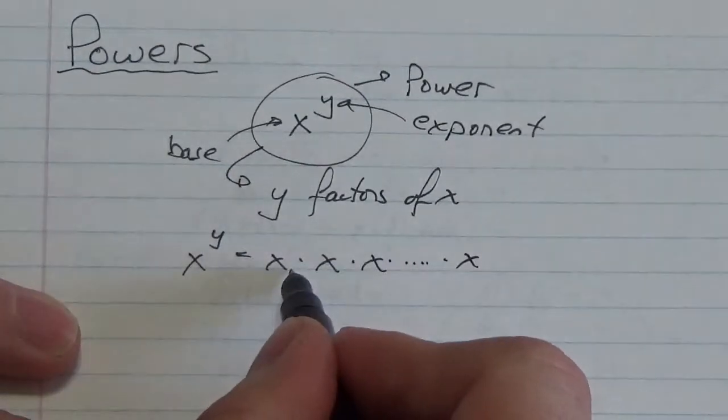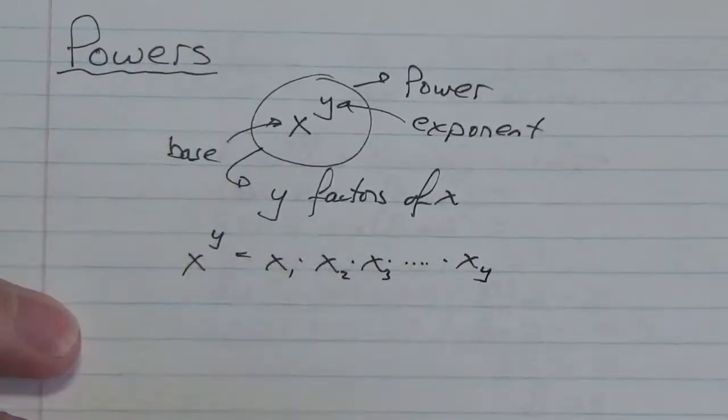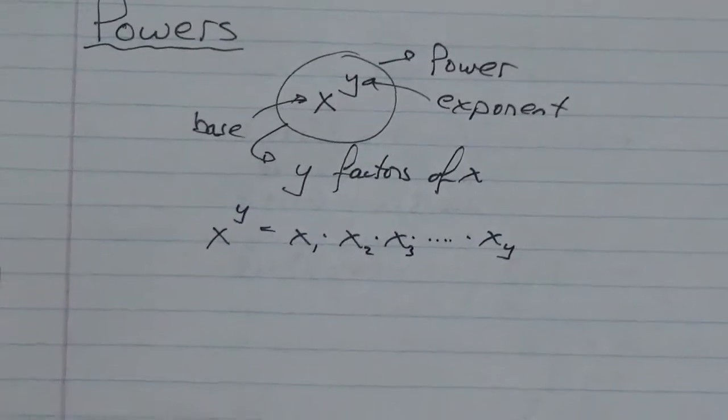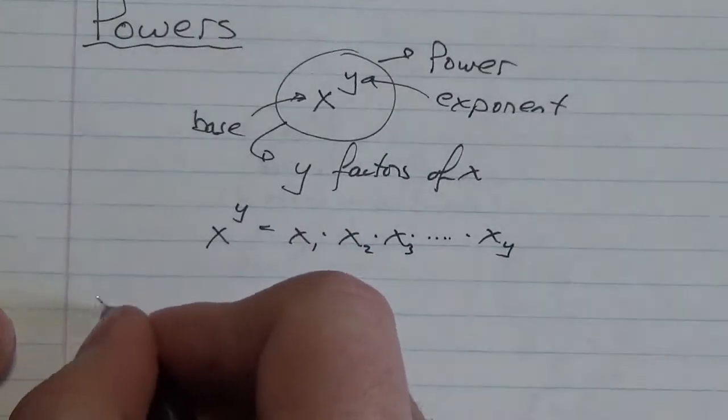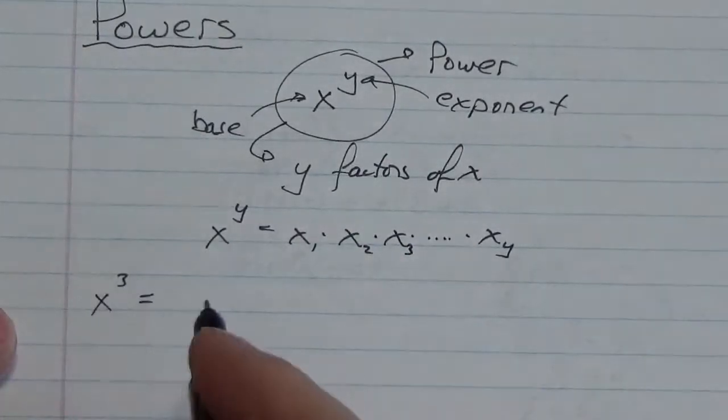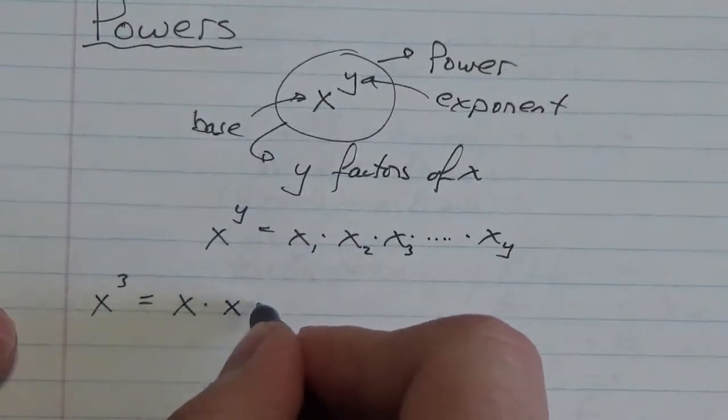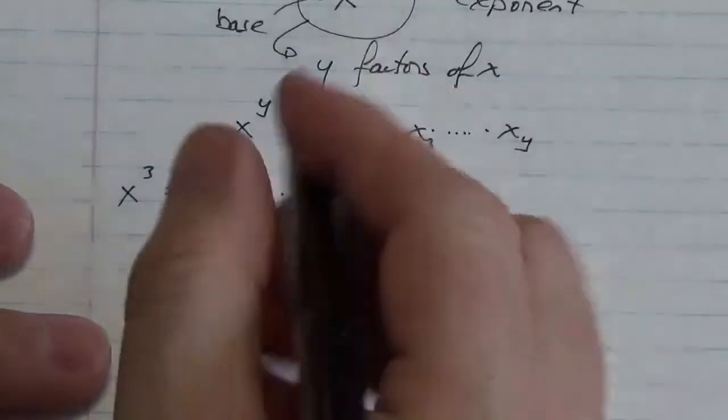We might even count them by putting little subscripts here: I've got 1x, then 2x, then 3x, all the way until I've got y of them multiplied together. I don't think that's anything too profound, but specifically here, if I give you x cubed, this is equivalent to a value where x is a factor three times.